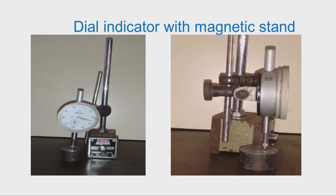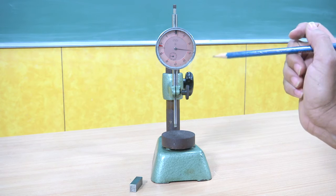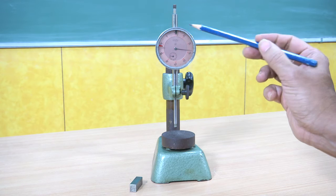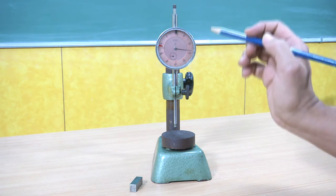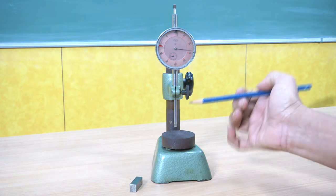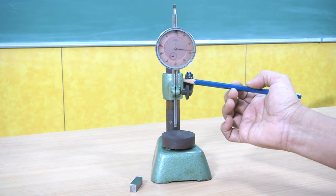This shows a dial indicator with a magnetic stand. We can see the magnetic stand and how the dial indicator is fixed to it. I will now explain how to use the dial indicator for comparing the sizes of workpieces — that is, using the dial indicator as a comparator. This is the dial, and this is the stem used for fixing the dial indicator to the stand.